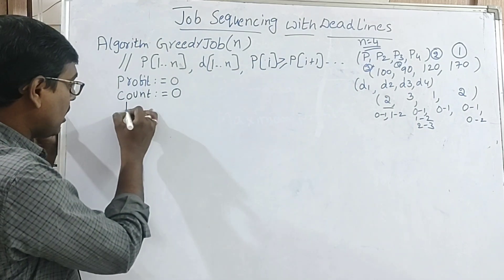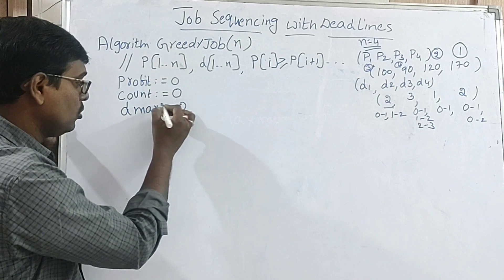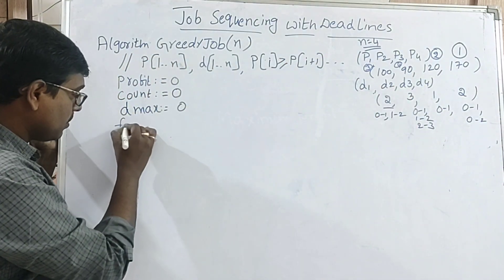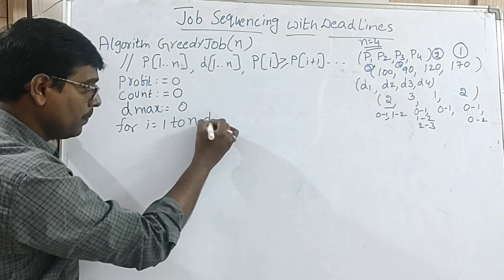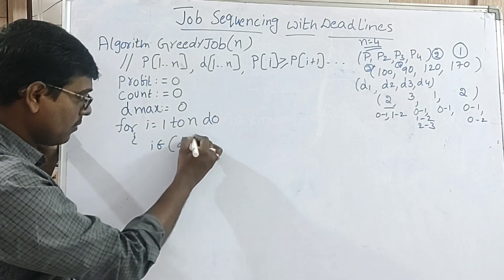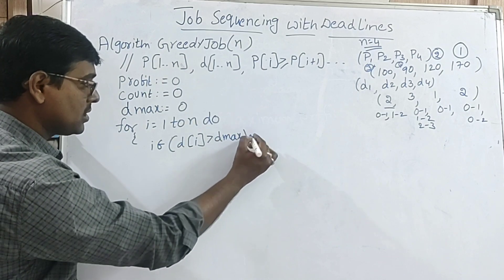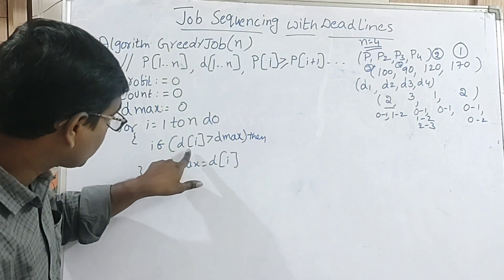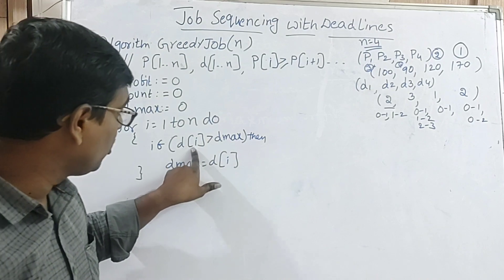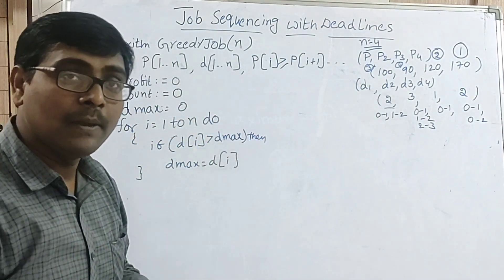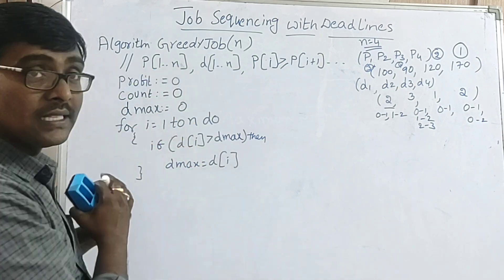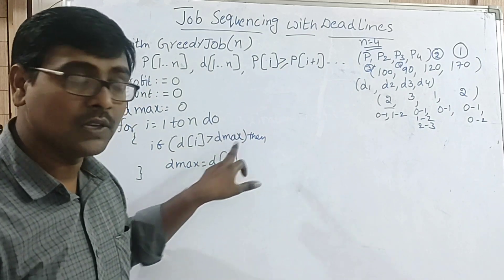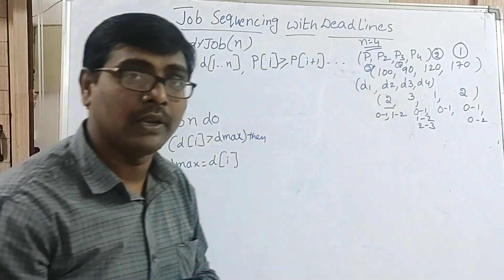I am using a variable dmax, initially equal to zero. The first step is to calculate the maximum deadline. For i equal to 1 to n, repeat the loop and check: if D[i] is greater than dmax, update dmax. Deadline of job 1 is 2 — 2 > 0, so dmax updates to 2. Next, 3 > 2, so dmax updates to 3. Then 1 > 3 fails, and 2 > 3 fails. Once out of the loop, the maximum deadline is 3.